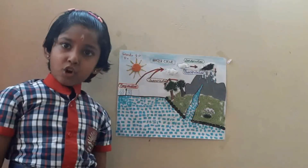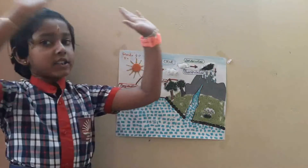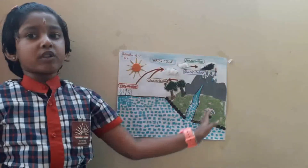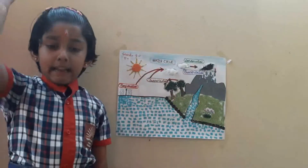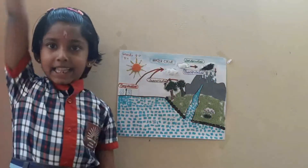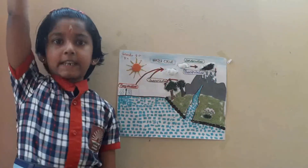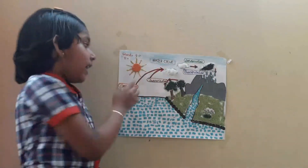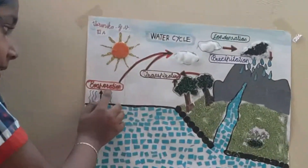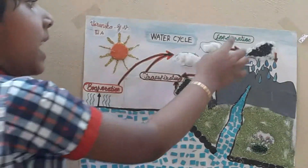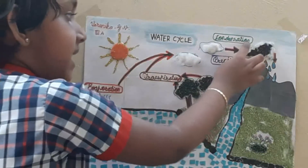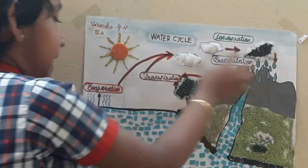The water cycle shows the continuous movement of water within the Earth's atmosphere. The main stages are evaporation, transpiration, condensation, and precipitation.